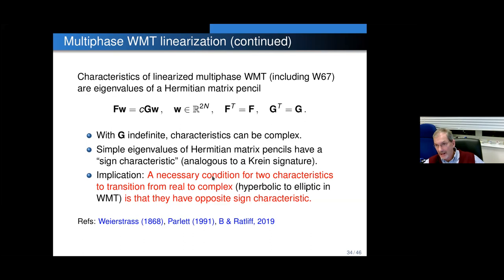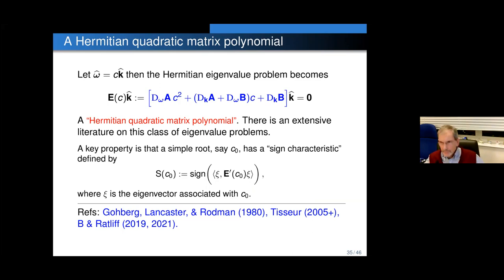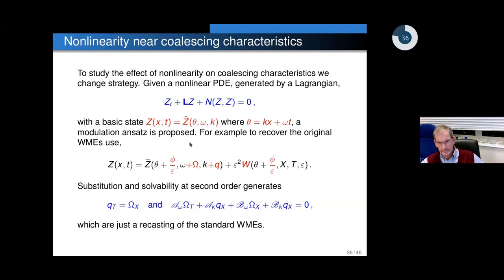A tidier way of dealing with this is to eliminate the first row and you get a quadratic Hermitian matrix polynomial — a Hermitian quadratic matrix polynomial — for which there is an extensive literature. A key property is that a simple root has a sign characteristic. Dan and I have been adapting the theory of the sign characteristic to Whitham modulation theory.